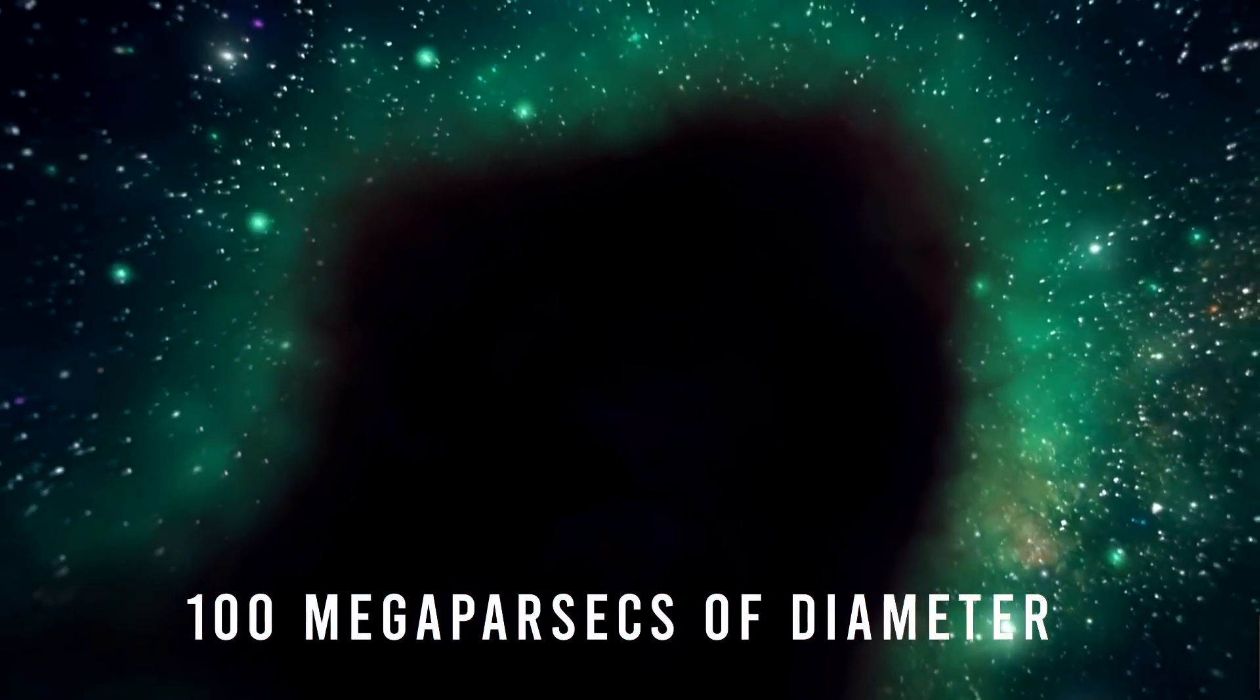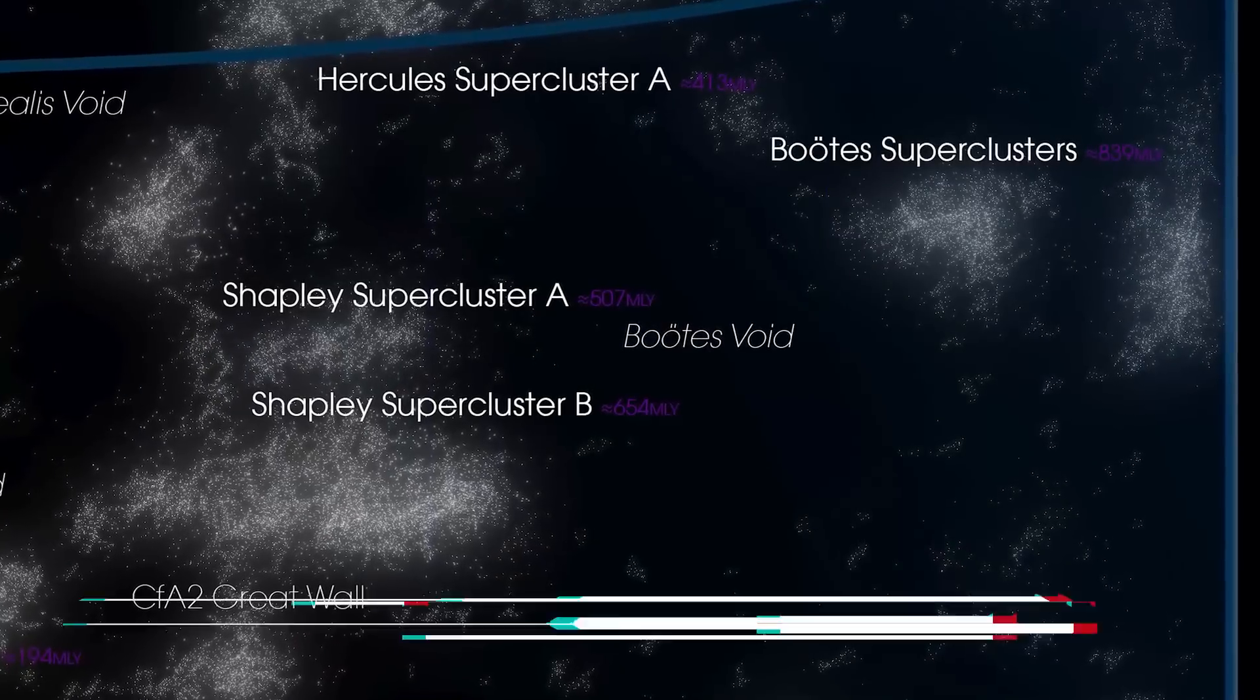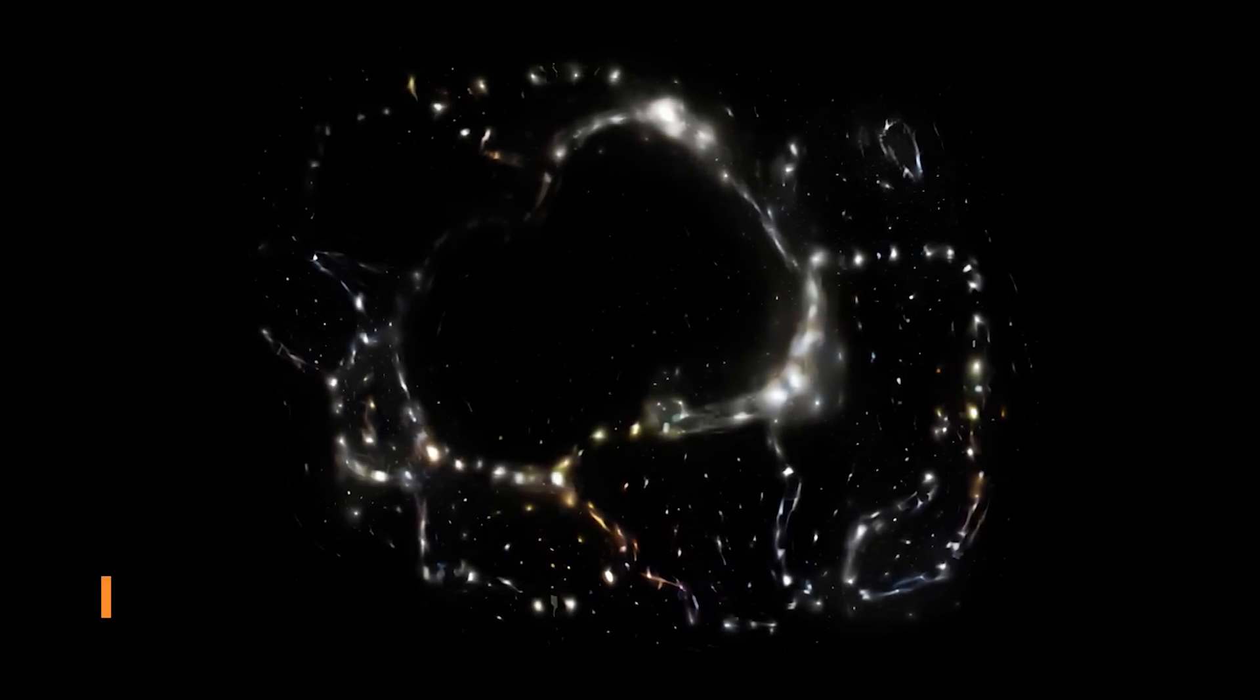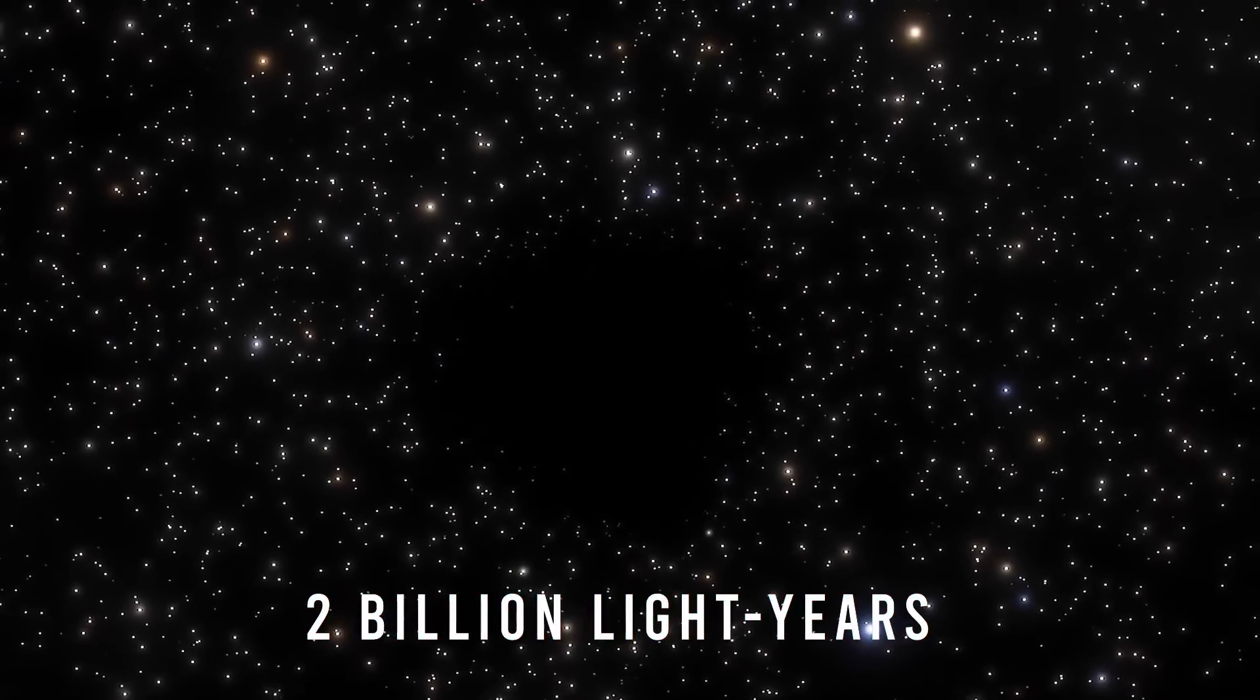Voids on average are 100 megaparsecs in diameter. The Boötes Void is around 34 to 50 megaparsecs in diameter, but there is an enormously large void called the KBC Void, which is around 2 billion light years across.